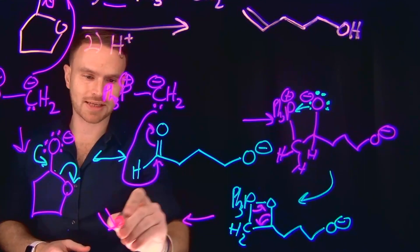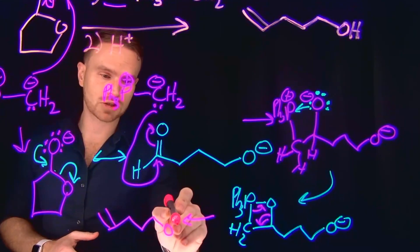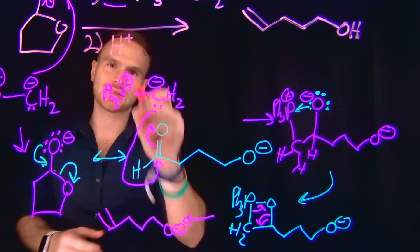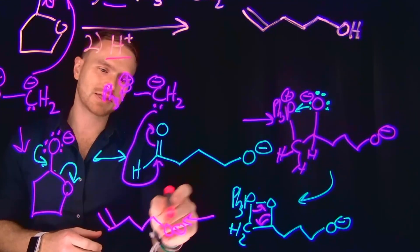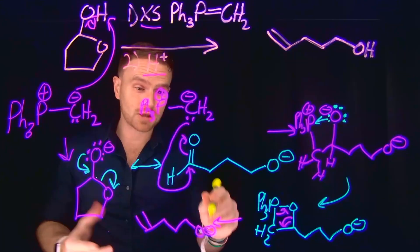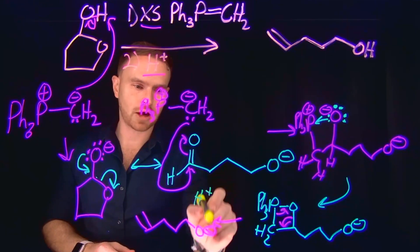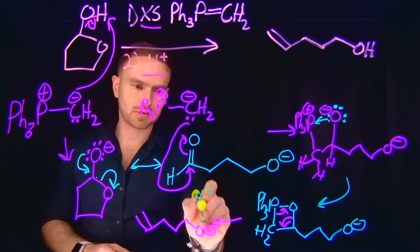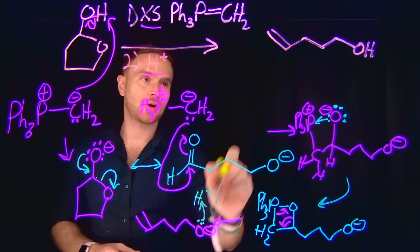So at this point, we have formed most of our product, and all that remains is to use our acidic workup to protonate this alkoxide. And once we protonate this alkoxide, because it will come and attack the proton, forming finally our final product, which is going to be this alcohol.